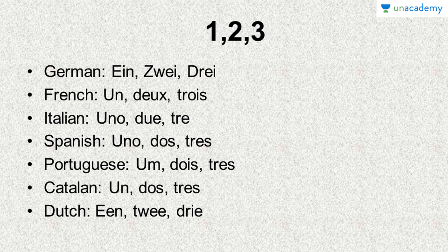In French it's un, deux — it's not 'doex' or 'dukes'. The EU sounds like 'E' and that X is not pronounced. So deux, and the OI in trois is like 'va', so trois. From Italian onwards it becomes more straightforward. In Spanish it's uno, dos and tres. In Portuguese: um, dois and tres.